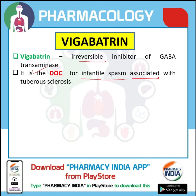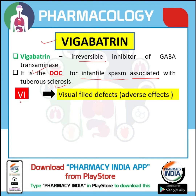Infantile spasm is associated with tuberous sclerosis. Now we are going to learn with the help of a trick, and the trick is hidden in its name. In VIGABATRIN, 'VI' denotes visual field defect.